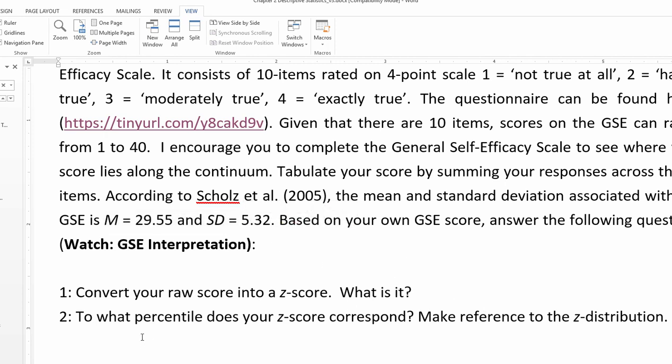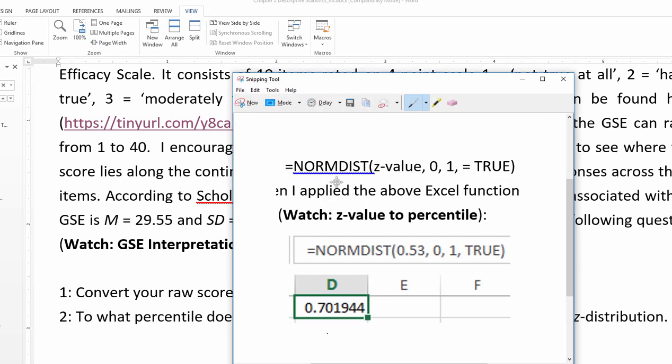So to get a more precise percentile rank score you could use the z-score distribution to get that. And so let's do that. That's actually making use of that section of the textbook that showed the norm distribution Excel function: equals NORMDIST, z-value, so whatever z-value you got.